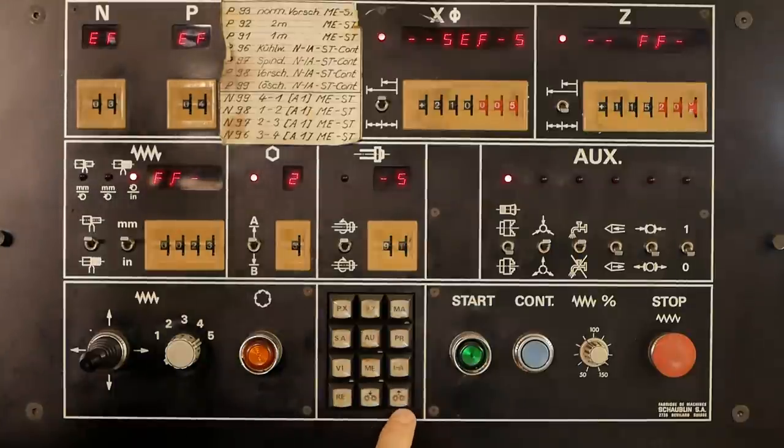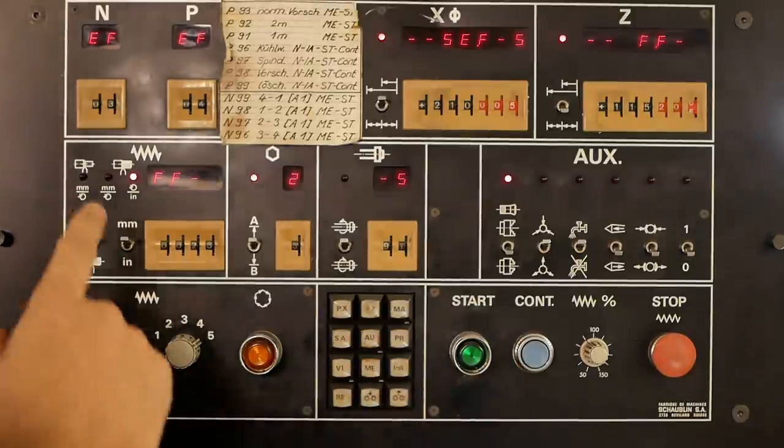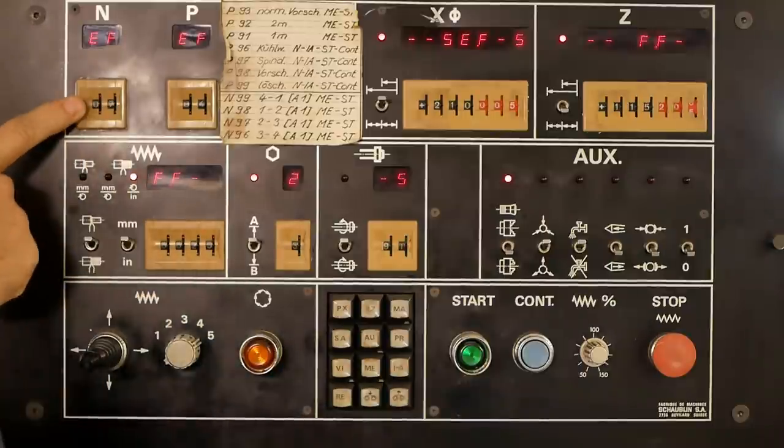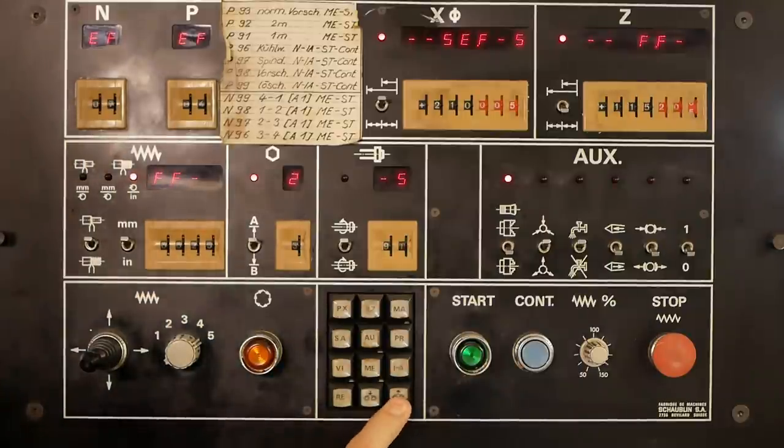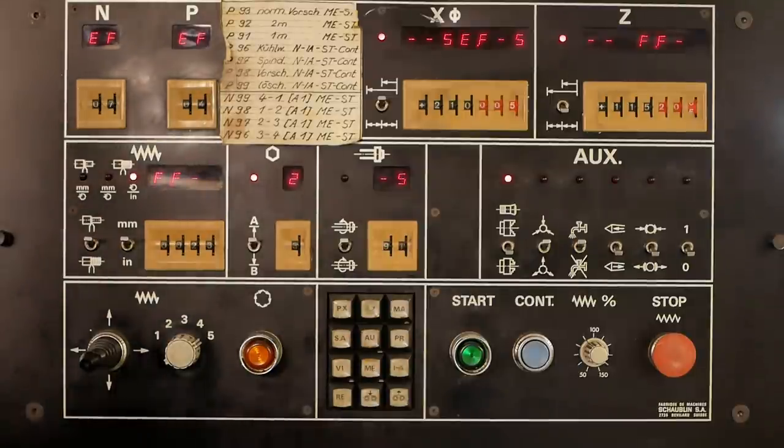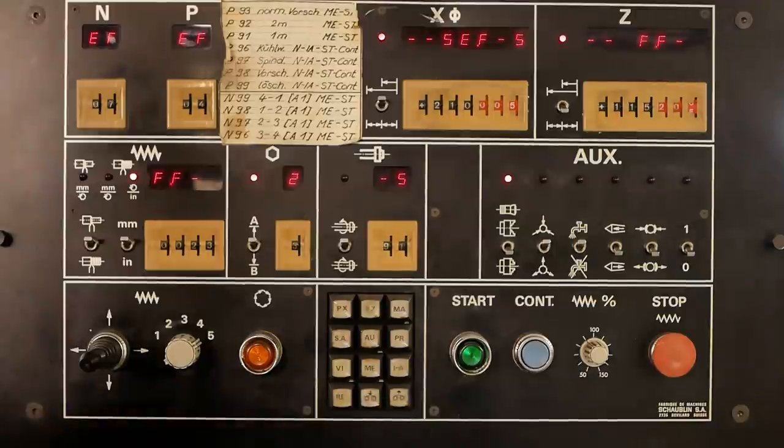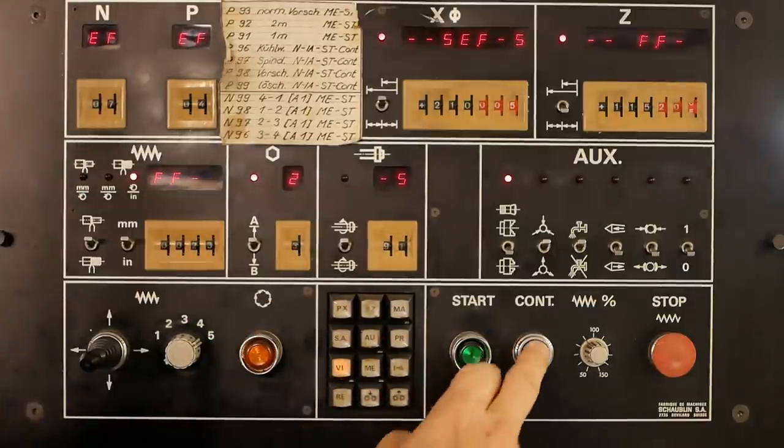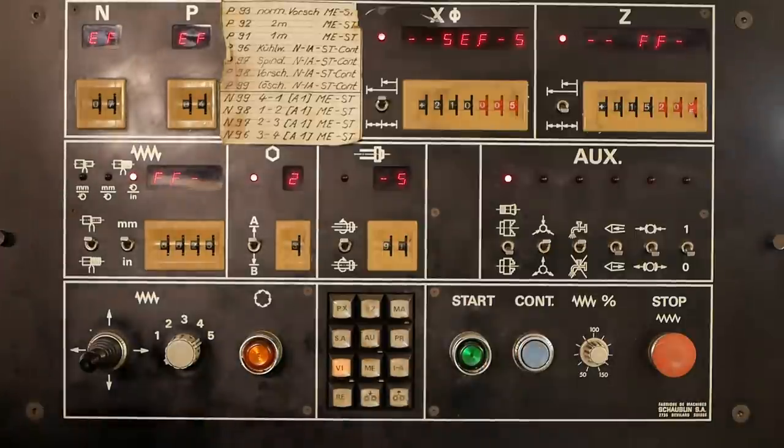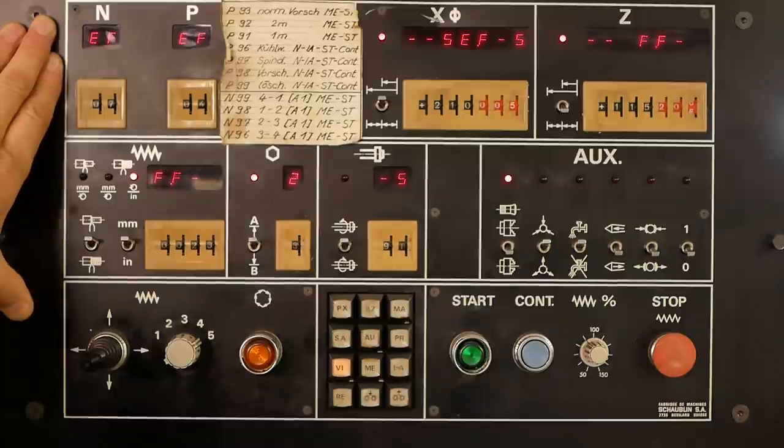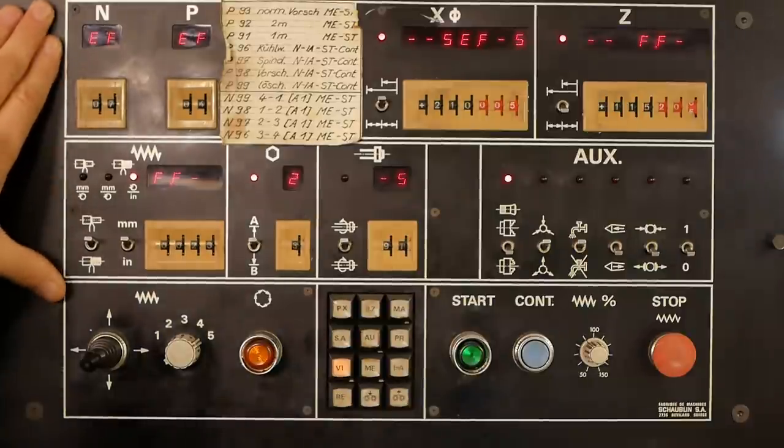I believe all you'd have to do is set the number of the program between 1 and 20. You hit that button and it automatically scans through your tape until it finds the program of that number and loads it. And then of course you can go into the verify mode and go through and check it before you run it. It's actually a pretty clever controller and covers pretty much everything that you'd expect from a modern controller for a lathe.